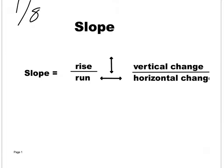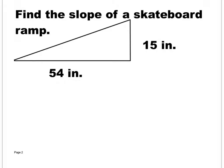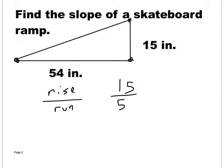You're asked to find the slope of the skateboard ramp. Slope is rise over run. How much does this change vertically from here to here? It changes 15 inches. From here to here, how much has it changed horizontally? 54 inches. Rise over run is 15 over 54, and then I reduce it — divide both by three — to get the simplified fraction.